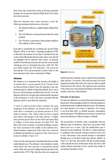Principle of Operation. The pressure altimeter is an aneroid barometer that measures the pressure of the atmosphere at the level where the altimeter is located and presents an altitude indication in feet. Air is denser at sea level than aloft; as altitude increases, atmospheric pressure decreases. This difference in pressure at various levels causes the altimeter to indicate changes in altitude. The dial of a typical altimeter is graduated with numerals arranged clockwise from 0 to 9. Movement of the aneroid element is transmitted through gears to three hands: the long thin needle with an inverted triangle indicates tens of thousands of feet, the short wide needle indicates thousands of feet, and the long needle on top indicates hundreds of feet.